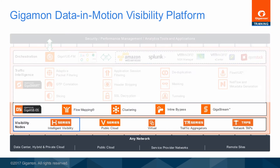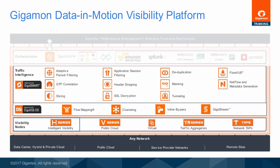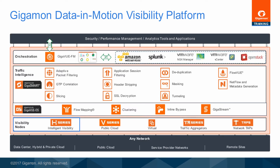The Gigaview OS drives fundamental fabric services such as flow mapping, clustering and inline bypass. Traffic intelligence is powered by Gigasmart technology, which provides stateful and packet-level optimization and normalization functions. Gigaview Fabric Manager provides centralized management and a common policy framework for the entire visibility fabric. Fabric Manager also enables software-defined visibility for programmability, automation and tool integration, through an open, extensible framework.